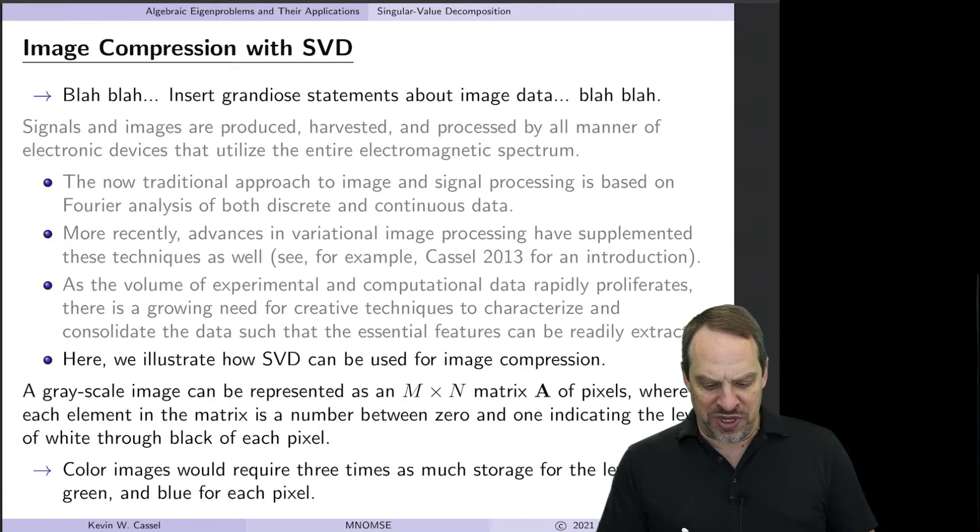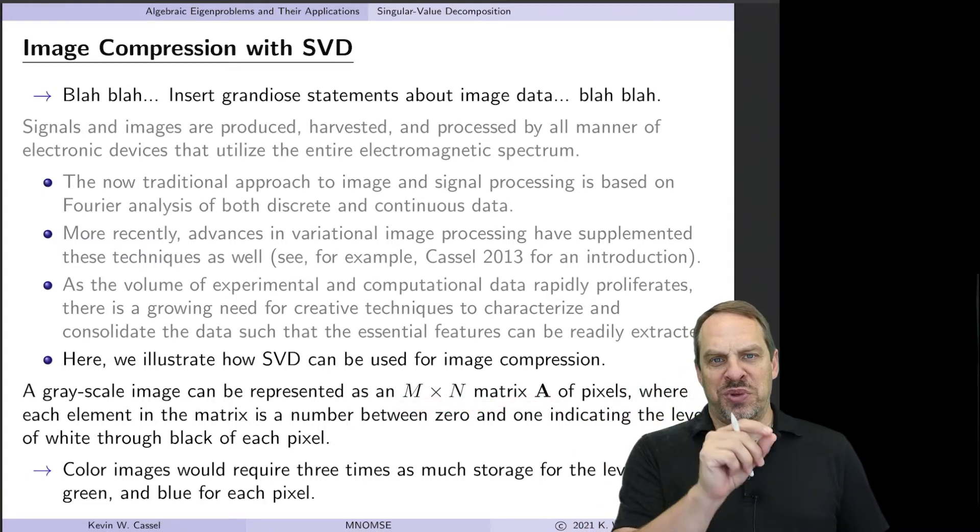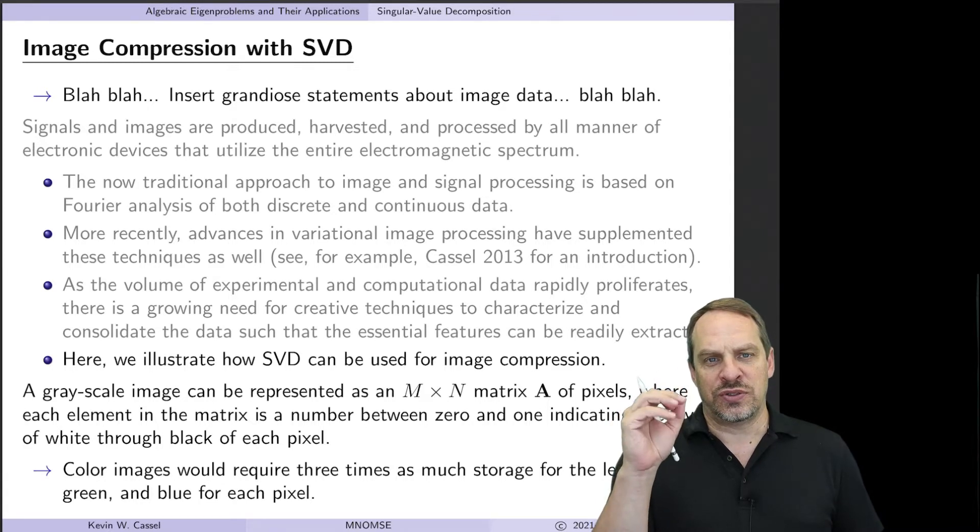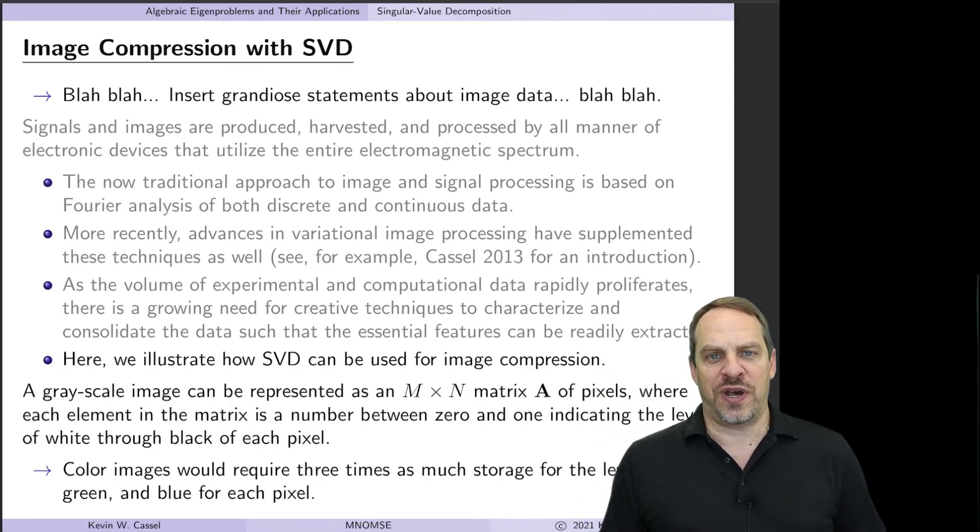So we're going to take a matrix A, it'll be M by N, and each element in the matrix is going to represent a single pixel of the image. And each pixel will be a number between zero and one representing the grayscale. So zero would be completely white, one would be completely black, and then any grayscale value in between.